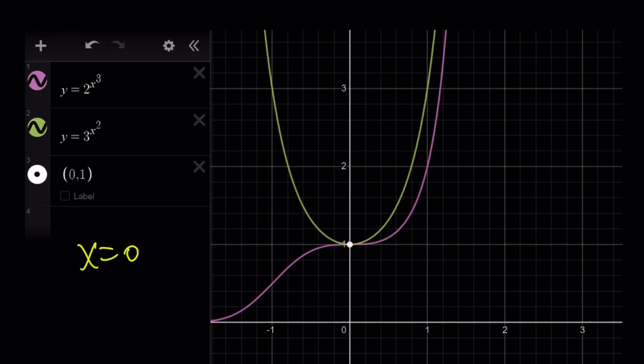So, 2 to the power x cubed is going to eventually grow faster because the exponent is more powerful. And that's going to give us the other solution, which is ln 3 over ln 2.